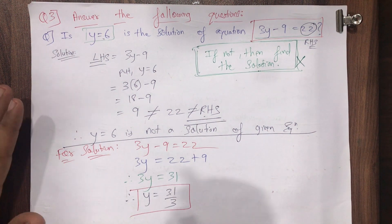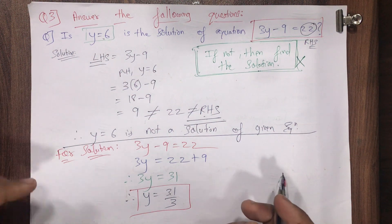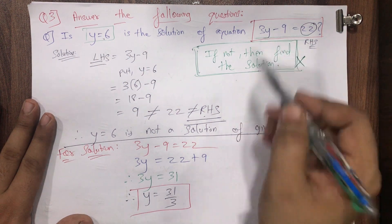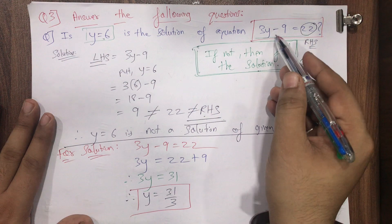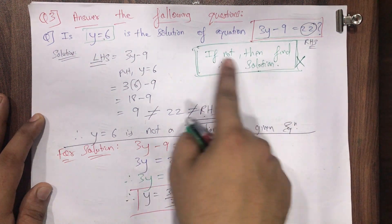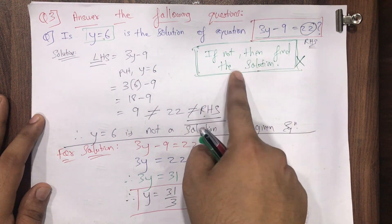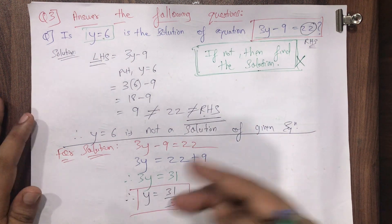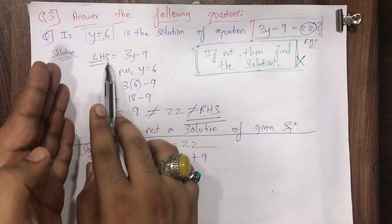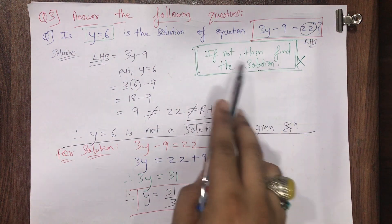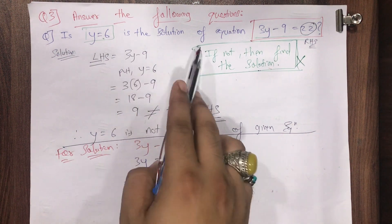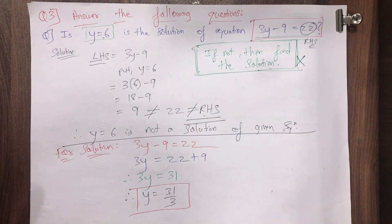You can check afterwards — pause the video and verify: take the left hand side and substitute y as 31 upon 3, and you will get the right hand side answer as 22. So this extended part — if not, then find the solution — you only need to solve if the given value is not the solution. If left hand side equals right hand side, no need to solve further. Pause the video and do it.